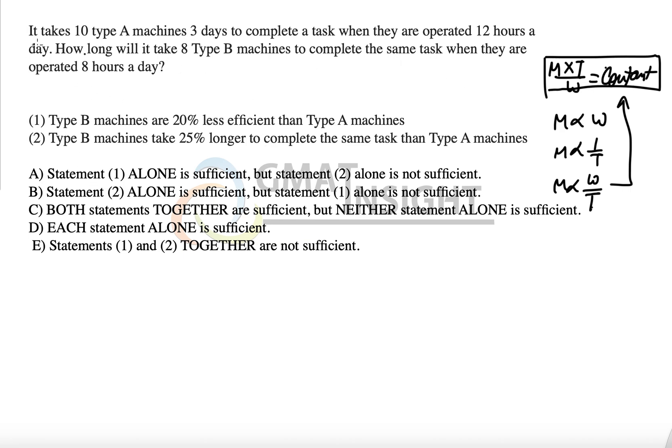In the first case, the manpower or the machine power is ten Type A machines, that means 10A. The time is three days to complete a task when they are operated 12 hours a day, that means the time is not just three days, three into twelve, because we have to write it in hours.